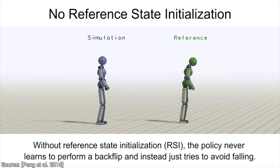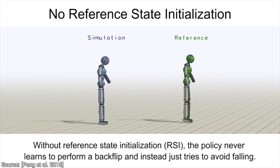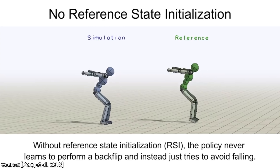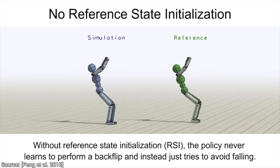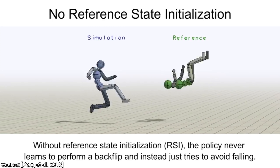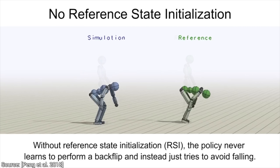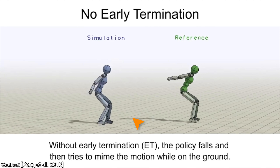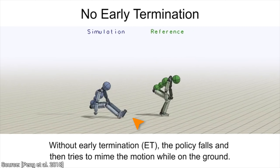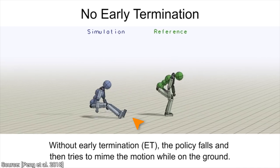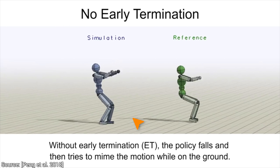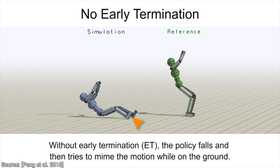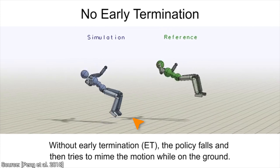A proposed technique called Reference State Initialization, or RSI in short, remedies this issue by letting the agent explore better during the training phase. So we add RSI — but it appears to fall on the ground and tries to continue the motion from there. A plus for effort, little AI, but unfortunately that's not what we are looking for.